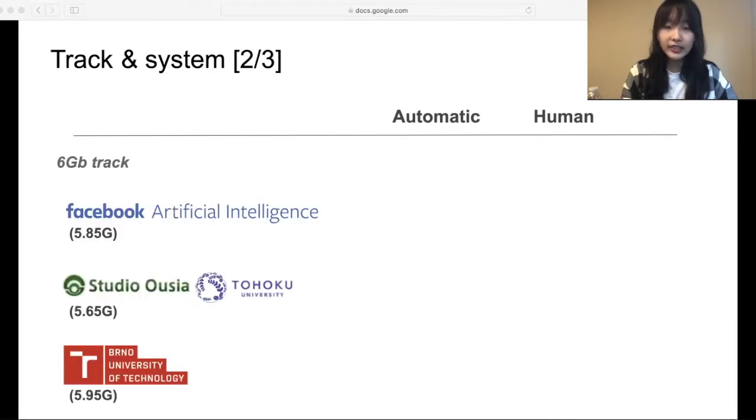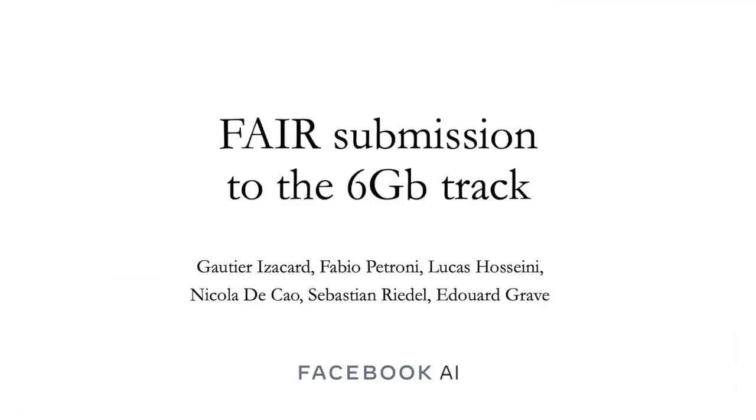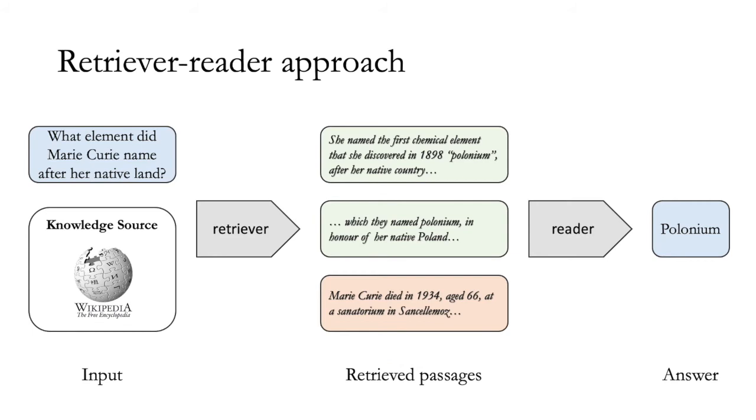The second track is 6GB track, and here, the system should be under 6GB and achieve the highest accuracy. We have the top three systems, the first one from Facebook AI, the second one from Studio Oslo and Tohoku University, and the third one from Brno University of Technology. Hello everyone, my name is Gautier Izacard, and I'll represent our submission to the track evaluating systems under 6GB. Our system follows the standard retriever-reader approach, and is composed of two modules, the retriever and the reader. Given an input question, first the retriever locates relevant passages in a knowledge source, in our case Wikipedia. Then the reader processes the retrieved passages to generate an answer.